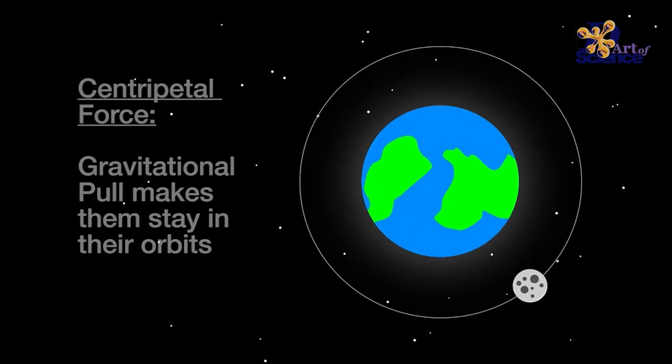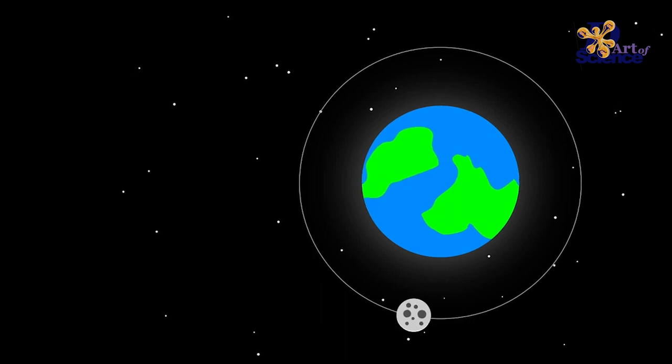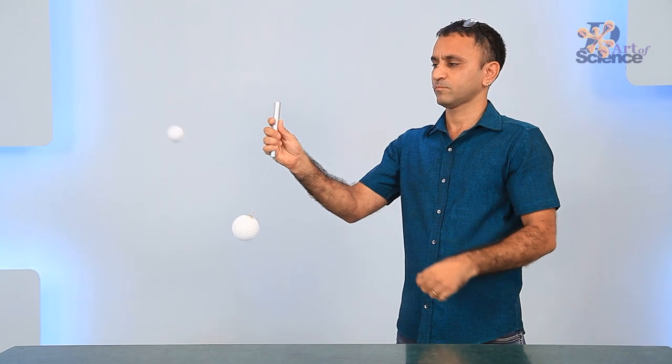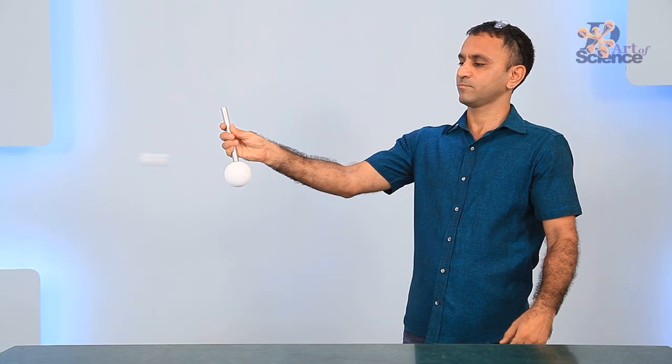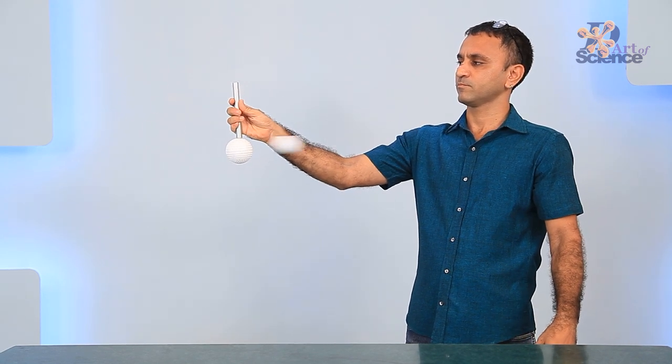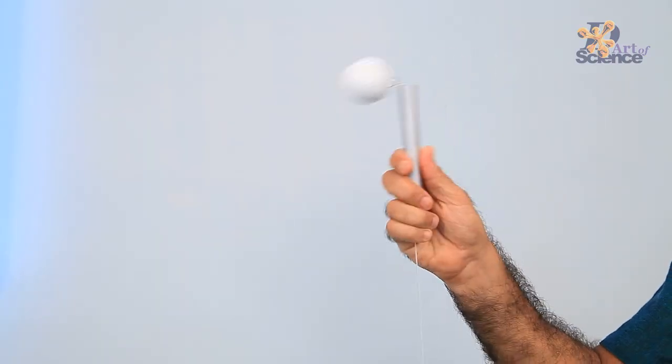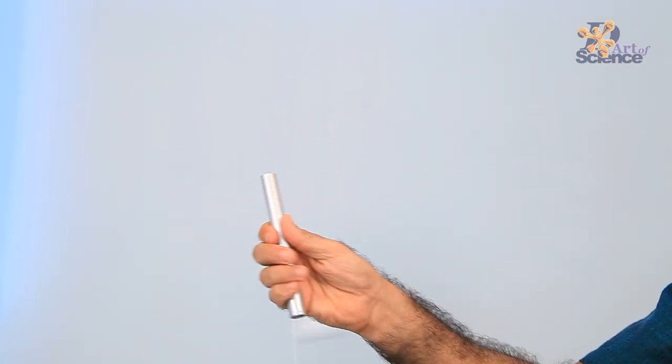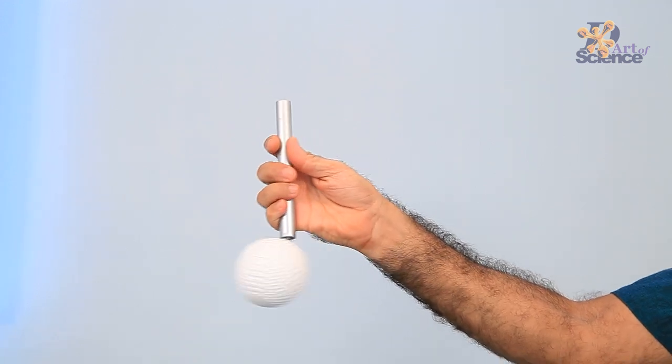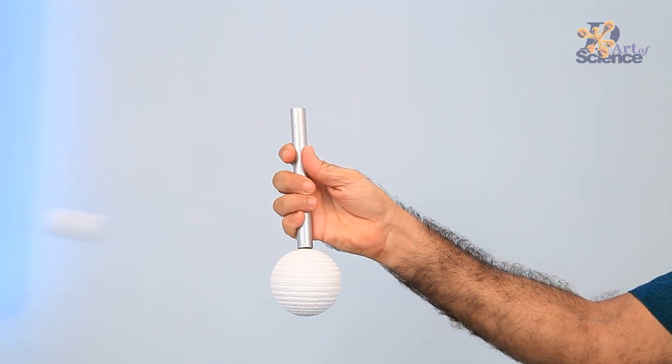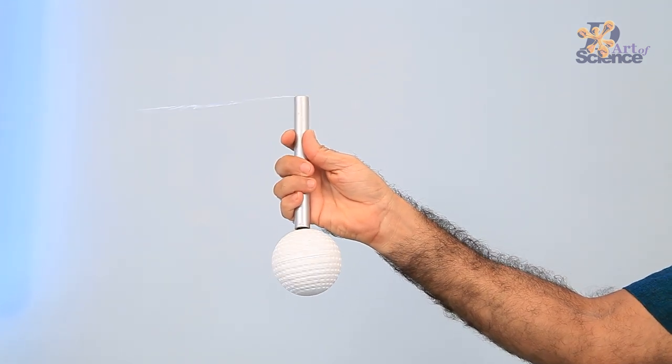string exerting centripetal force to keep them in place. One of the ways to actually show these forces is to perform this orbiting balls experiment. We know that the larger ball is heavier, but when we rotate the smaller ball, the tension in the string connecting the two balls increases due to the centripetal or the center-seeking force.